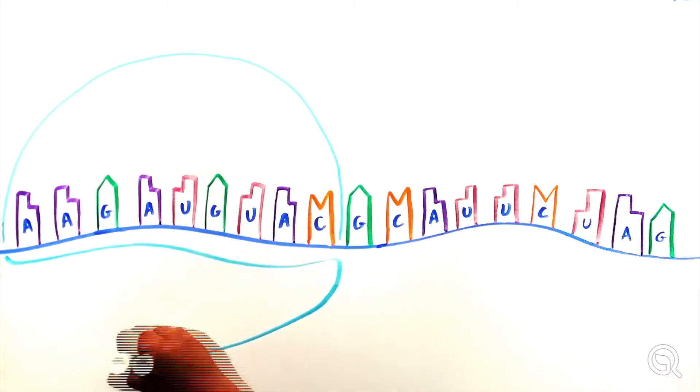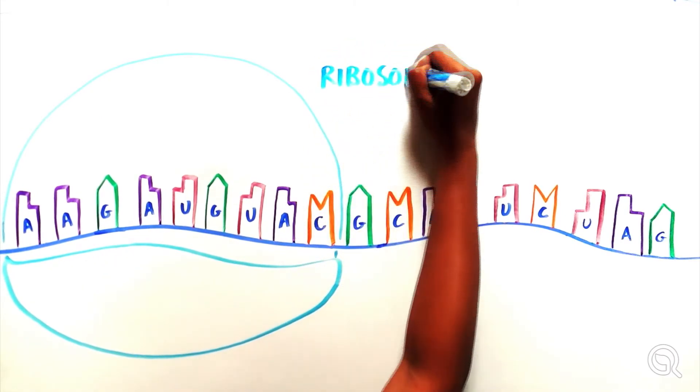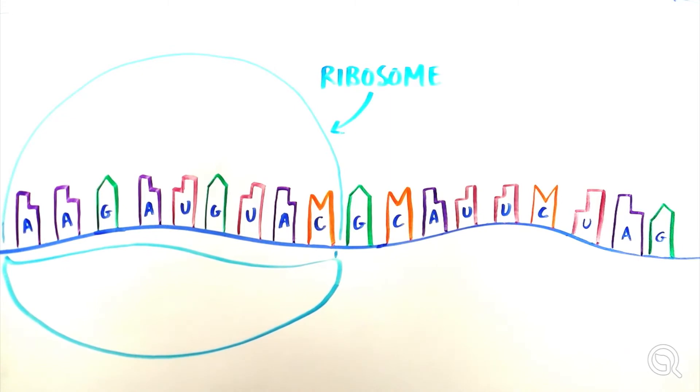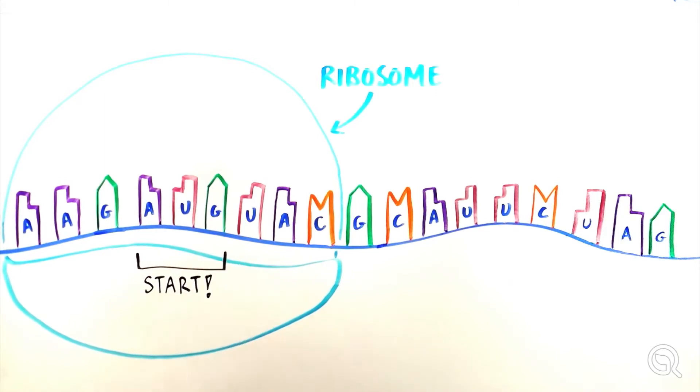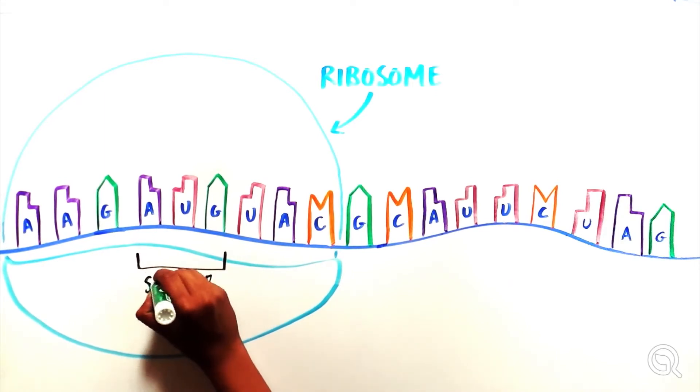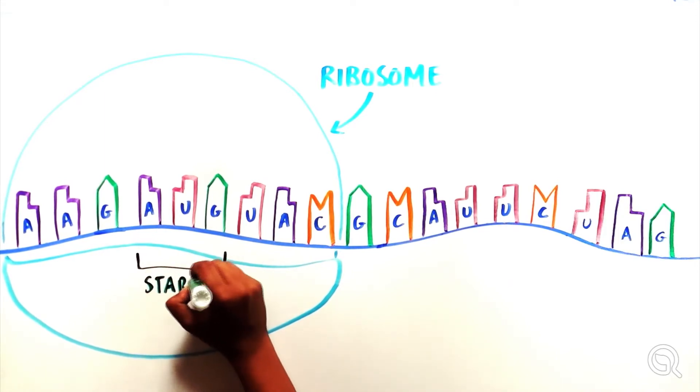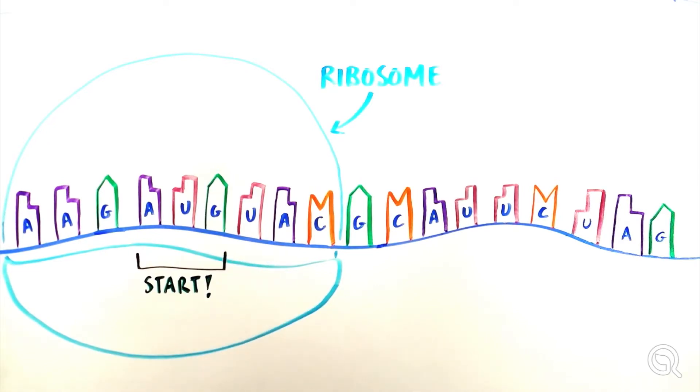The actual process of translation occurs through the action of a huge protein-RNA complex called the ribosome, which reads codons one by one and incorporates the appropriate amino acid. At the beginning of every mRNA is a start codon formed by the bases AUG, which codes for the amino acid methionine and tells the ribosome where to start translating.